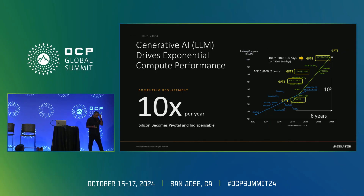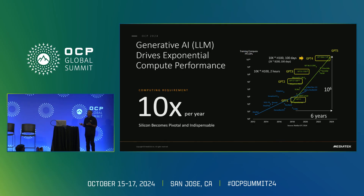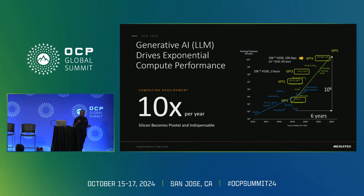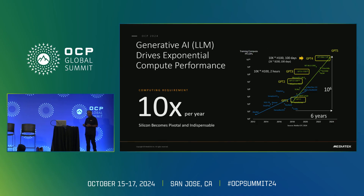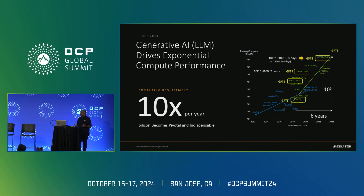I thought I'd start with sharing the problem statement. Many people have been talking about generative AI, so I borrowed one from NVIDIA — something that Jensen shared at GTC. What you see is that across six years, the performance requirement has grown by 10 to the 6, meaning it's 10x every single year. If you translate that into what it means for silicon — silicon is the heart of being able to meet this performance — it becomes very pivotal and indispensable. But if silicon can't meet those demands, how do you break those barriers? Today I'm going to share how we do that.